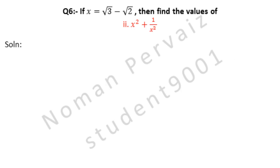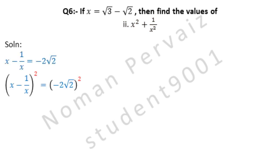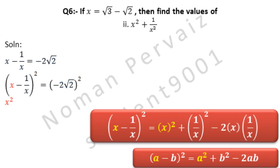Question number 6, part 2: if x is equal to under root 3 minus under root 2, then find the value of x² + 1 over x². We start by taking the value of x minus 1 over x from part 1, and we take the square on both sides of the equation, as indicated in blue color. We apply the formula: (a - b)² = a² + b² - 2ab. We write a² as x², plus b² as 1 over x whole square, which equals 1 over x².